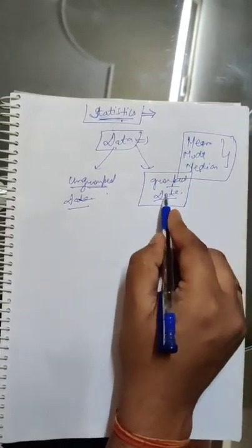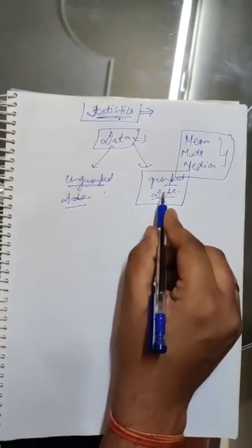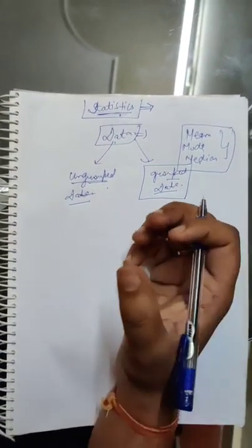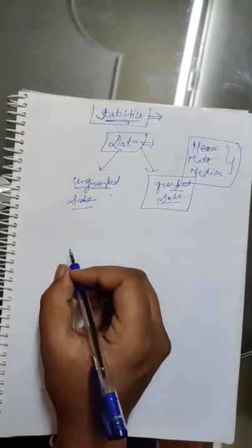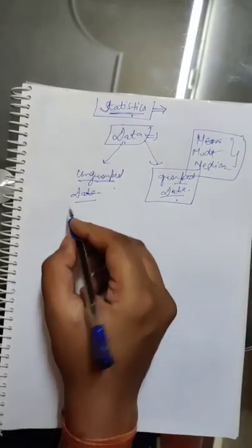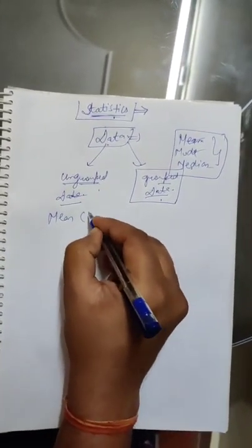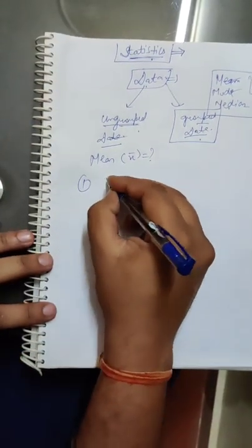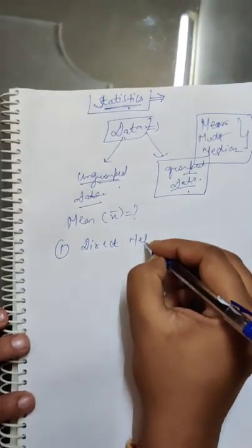Grouped data basically means data in which you don't have individual observations or frequencies — instead you will have clusters, meaning you will have groups. In that group you have to find the mean, mode or median. So in grouped data, how will you find the mean? The mean is denoted by x̄, found by the following methods.